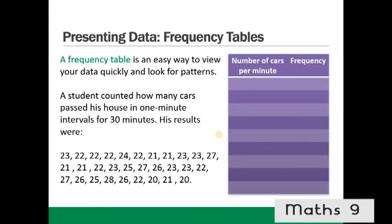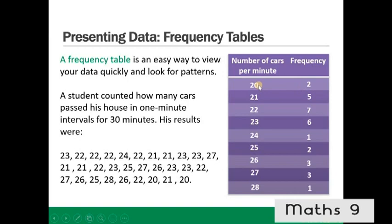We put the different numbers of cars each minute — 20, 21, 22, all the way to 28 — and then count how many times each occurred: 2, 5, 7, 6, 1, 2, 3, 3, 1. So the top row means that in two of the minutes there were 20 cars, and the next row means that in five of the minutes there were 21 cars.